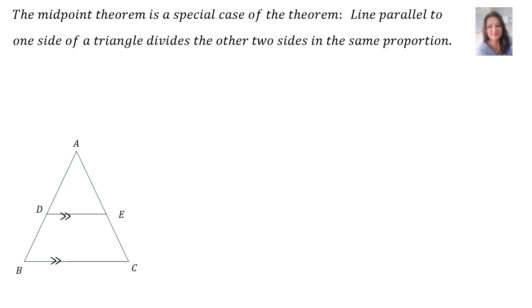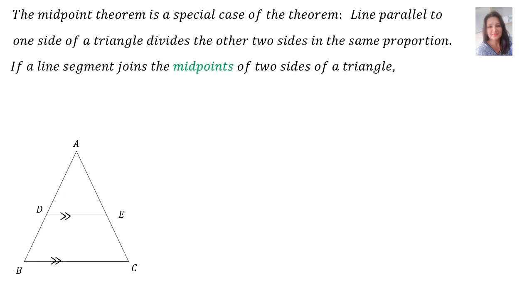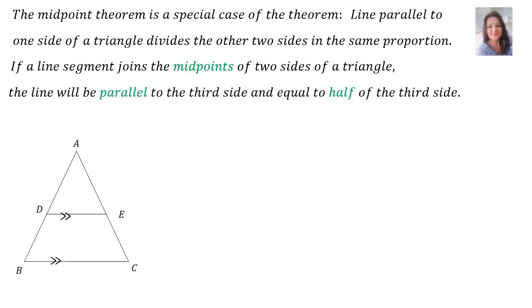The midpoint theorem is a special case of the theorem: a line lying parallel to one side of a triangle divides the other two sides in the same proportion. If a line segment joins the midpoints of two sides of a triangle, the line will be parallel to the third side and equal to half of the third side. The abbreviation we will use is 'midpoint theorem'.